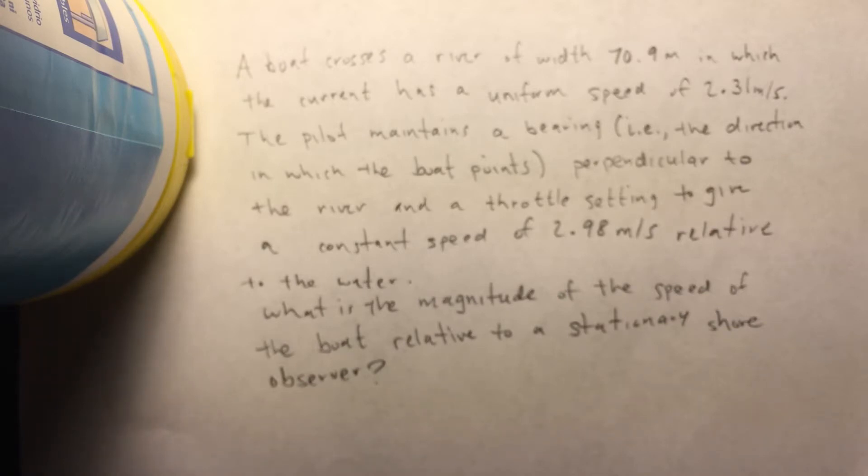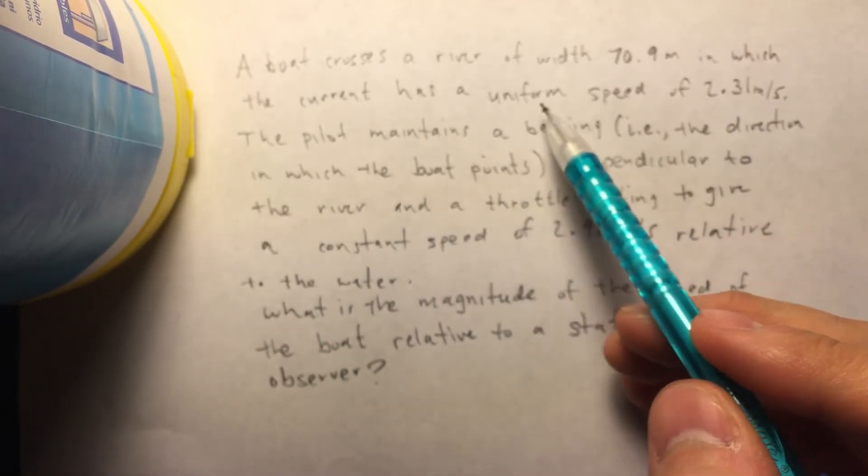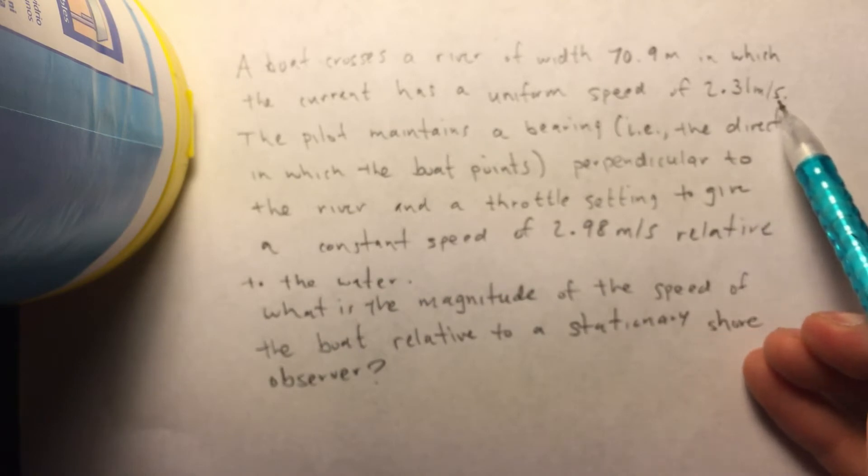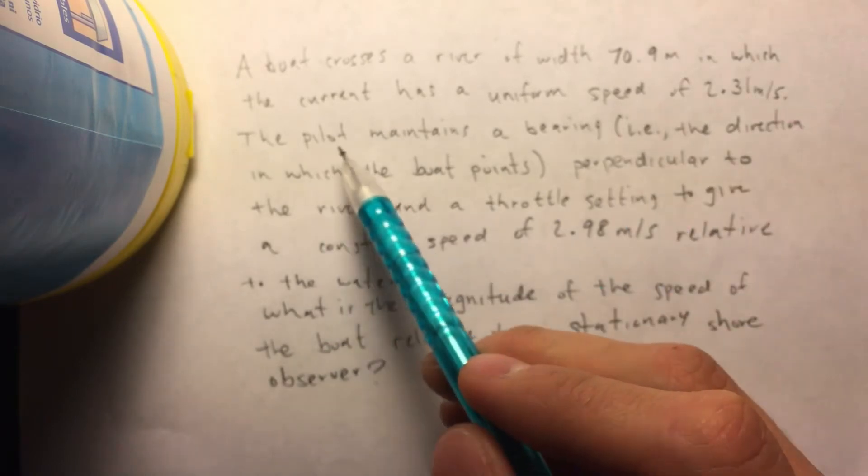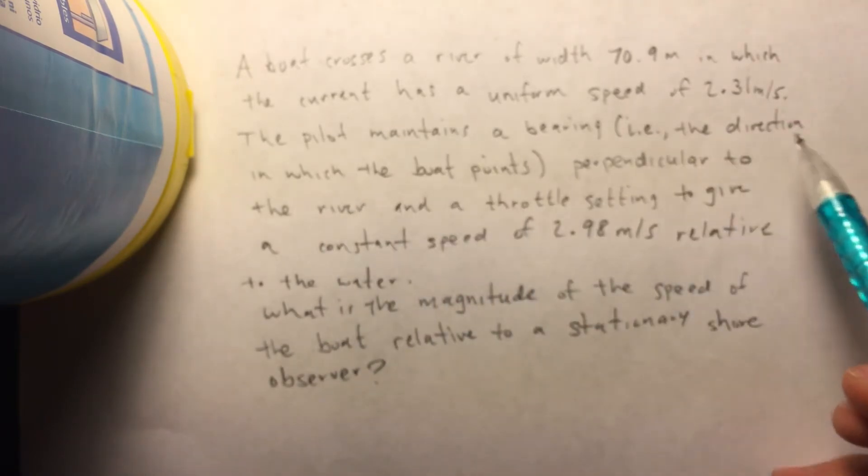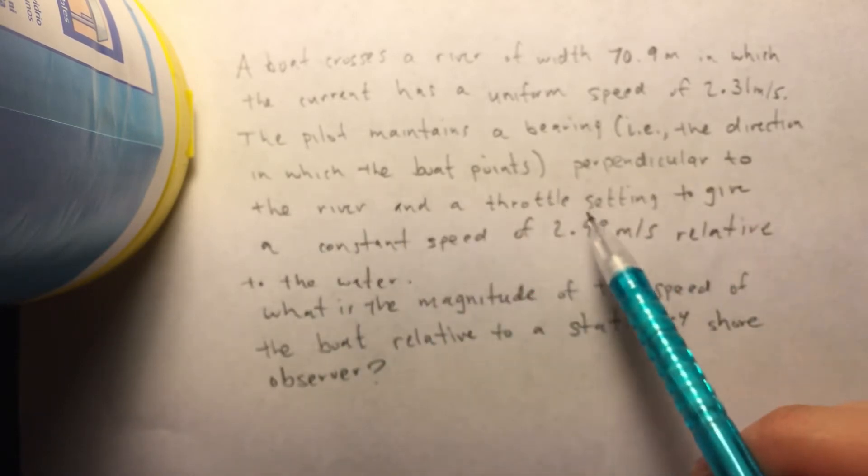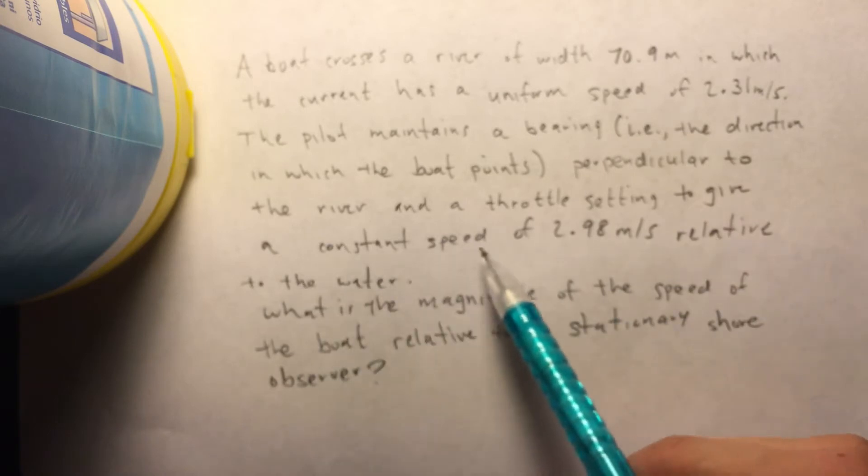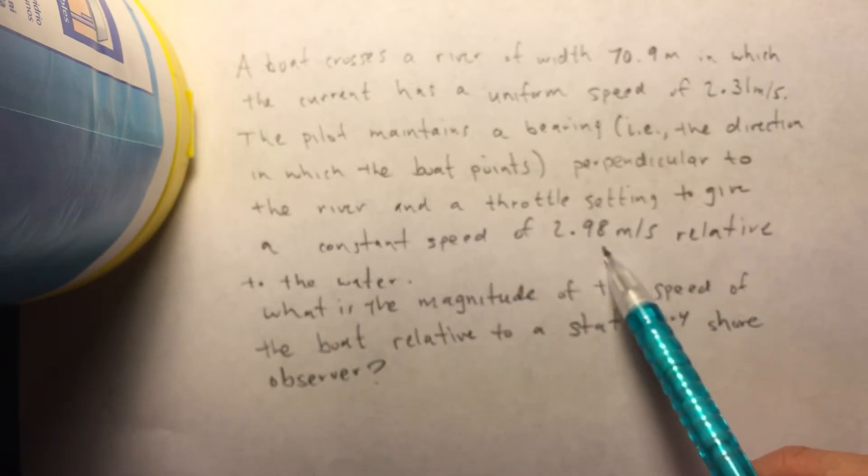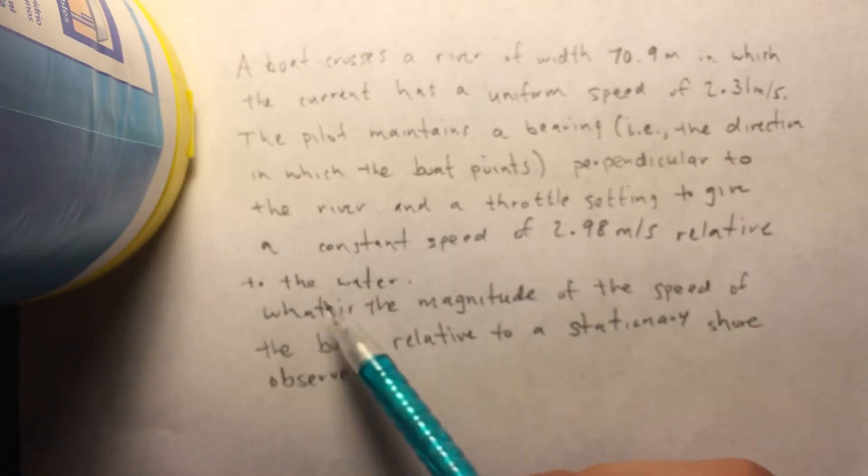Now, the problem says: A boat crosses a river of width 70.9 meters in which the current has a uniform speed of 2.31 meters per second. The pilot maintains a bearing, the direction in which the boat points, perpendicular to the river and a throttle setting to give a constant speed of 2.98 meters per second relative to the water.